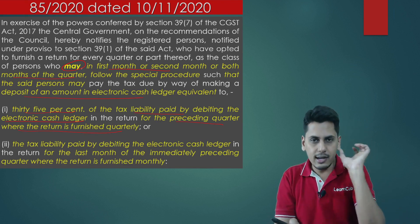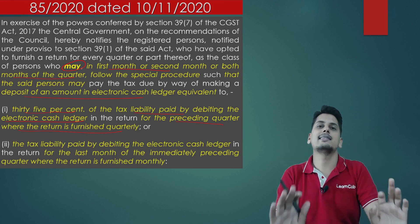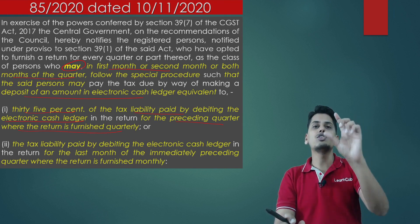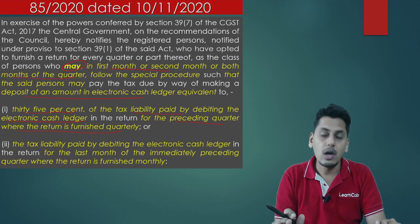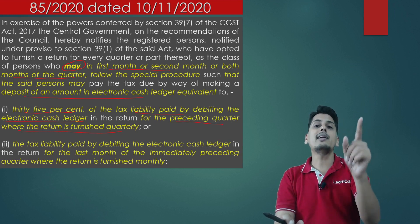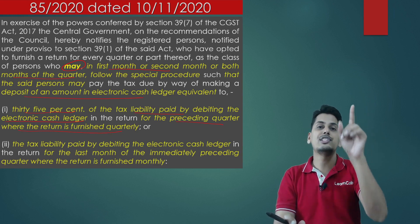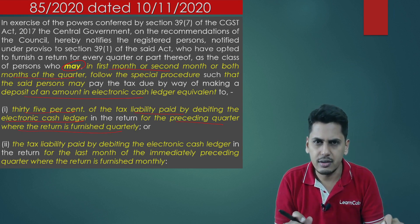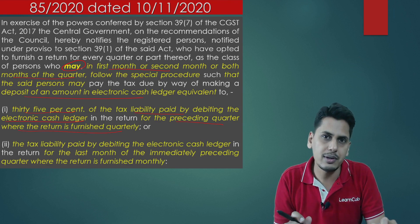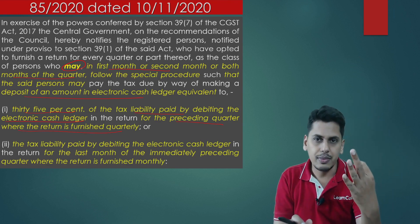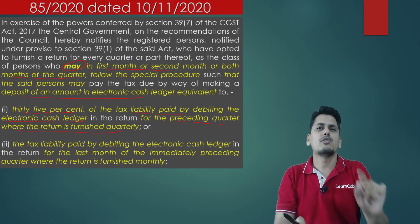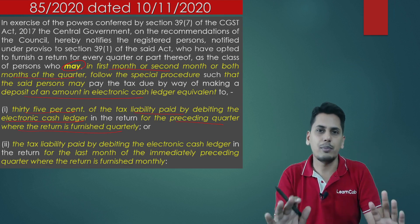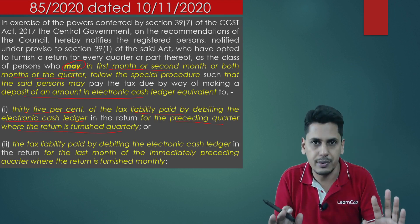The amount paid by debiting the electronic cash ledger multiplied by 35% becomes your first month liability. You are under QRMP for April, May, June. Take the preceding quarter January, February, March. For that quarter, you would have filed GSTR-3B. Of the total liability for the quarter, find the amount paid by debiting your cash ledger, then multiply it by 35%. Why 35%? Because that liability is for 3 months; you need to find the liability for 1 month. The average should be 33.34%, which they round up to 35%.